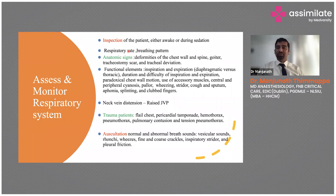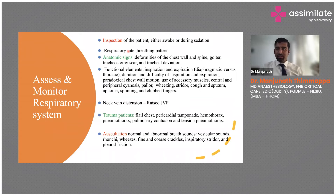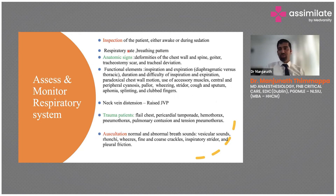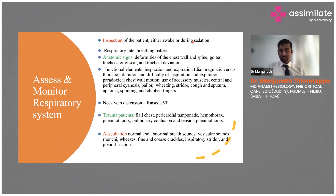Stridor indicates airway edema — if a burns patient is in stridor due to airway burns, plan for intubation with anticipation of a difficult airway. Ask about cough and sputum — its color and quantity. Assess for aphonia, splinting, and finger clubbing, which may indicate long-standing smoking or hidden malignancies. Also check for raised JVP. For trauma patients, use ultrasound — eFAST — to assess for pericardial tamponade, hemothorax, and pneumothorax.